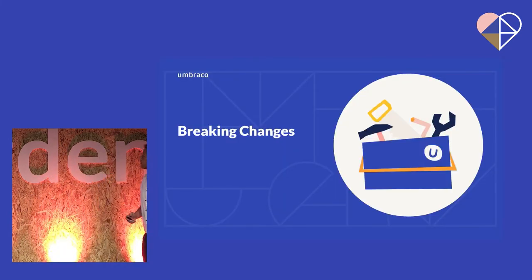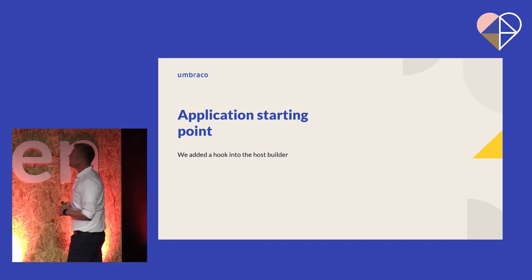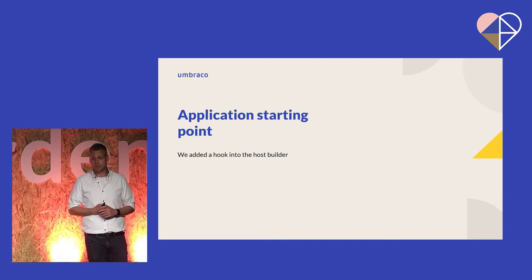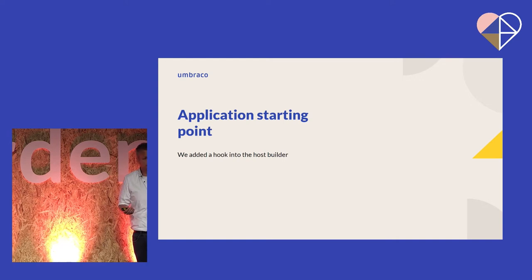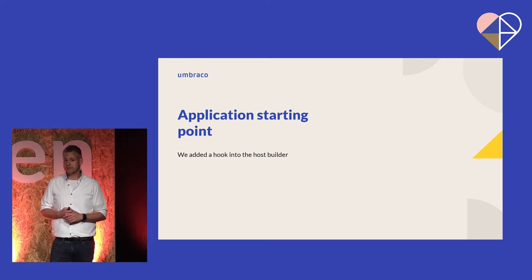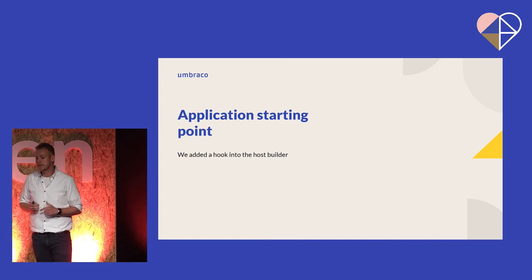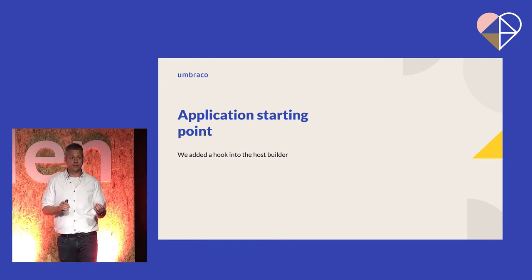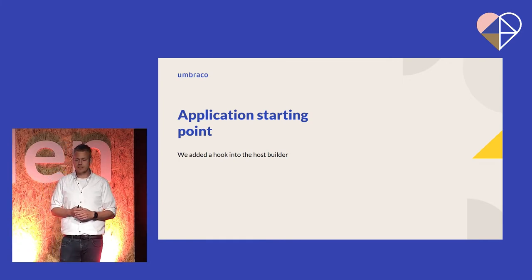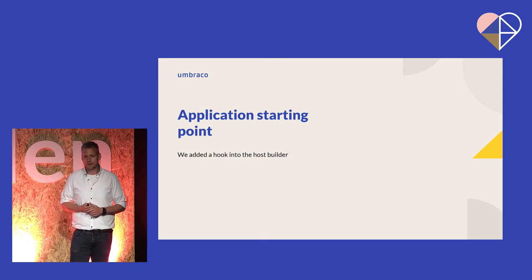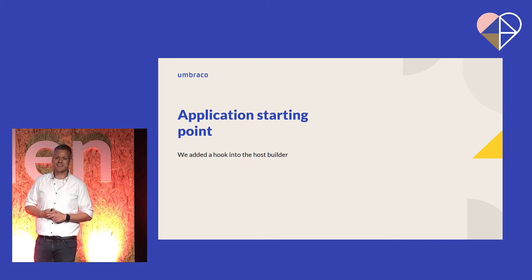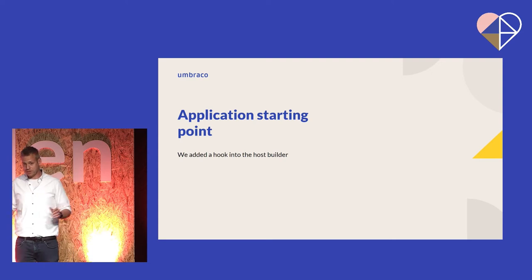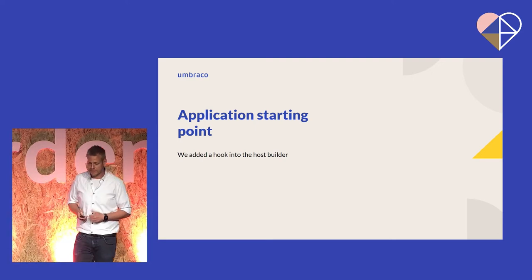Let's look at some of the breaking changes. At the application starting point, we need to hook in as early as possible. This is part of your codebase, so we can't update it automatically. The reason for this is to have a hook where we can initialize the static service provider. We have a static service provider that we use to avoid breaking changes in minor versions, and it needs to be initialized as early as possible. We had an issue — actually a null reference exception in 9.4 — because we tried to use it too early. To avoid that kind of issue in the future, we introduced this.